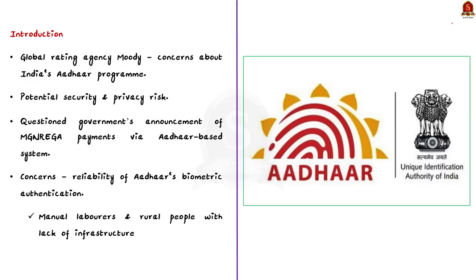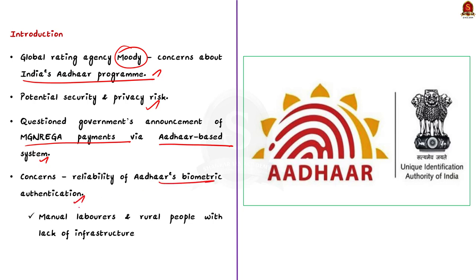Let's start with the introduction. You can write about the report published by rating agency Moody's. Recently, the global rating agency Moody's released a report that raised concerns about India's Aadhaar program. Its report highlighted the potential security and privacy risk of a centralized system like Aadhaar. The agency questioned the government's recent announcement about making MGNREGA payments through an Aadhaar-based system, specifically raising concerns about the reliability of Aadhaar's biometric authentication for manual laborers and rural people with lack of infrastructure.